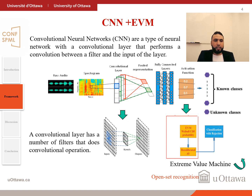Convolutional neural networks are a typical type of neural network that has convolutional layers. As can be seen in the figure, the audio comes in as a raw signal, then features of the spectrum are extracted, followed by the convolutional layer.